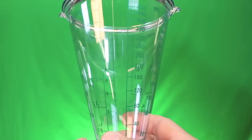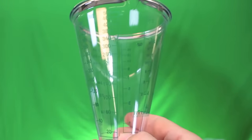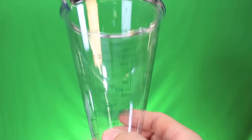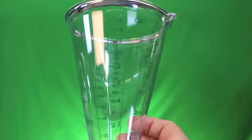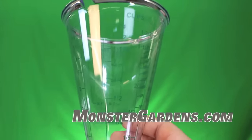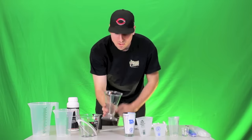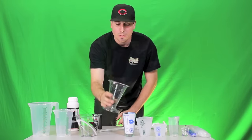Next here we have the 1-pint measuring mug. This one is really cool because it has different measurements on it. It's going to have everything from pints to ounces to cups to milliliters. You can see here it goes all the way up to 500 milliliters all the way down to 20, and it also has two spouts on each end for easy pouring.